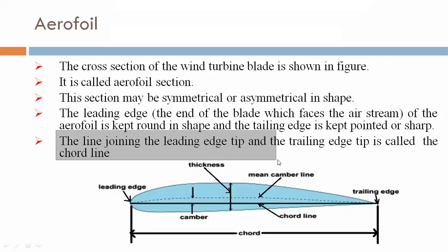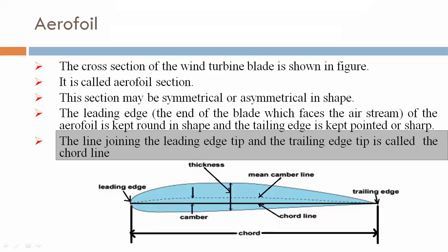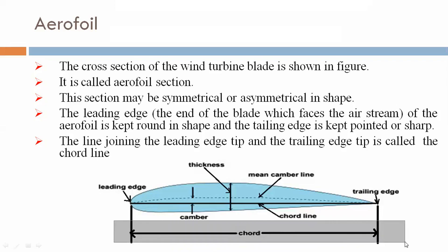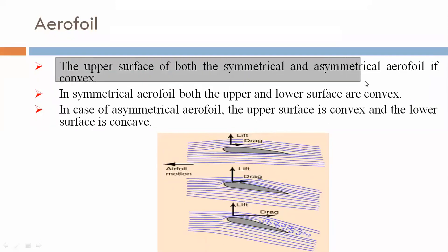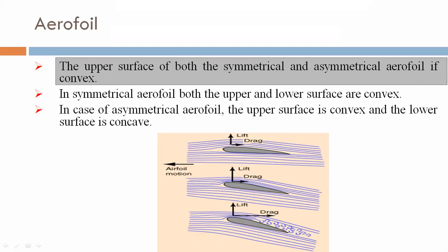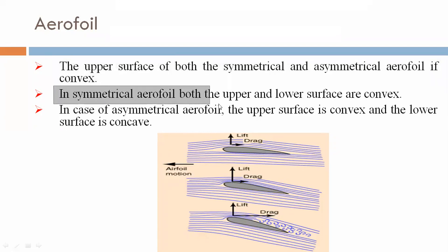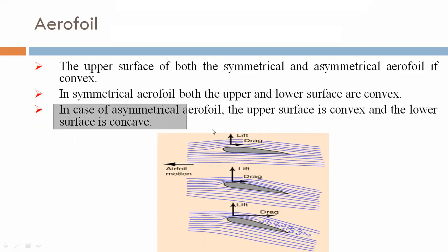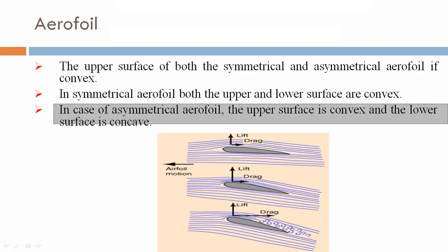The line joining the leading edge tip and the trailing edge tip is called the chord line. The upper surface of both symmetrical and asymmetrical airfoils is convex. In a symmetrical airfoil, both the upper and lower surfaces are convex. In an asymmetrical airfoil, the upper surface is convex and the lower surface is concave.